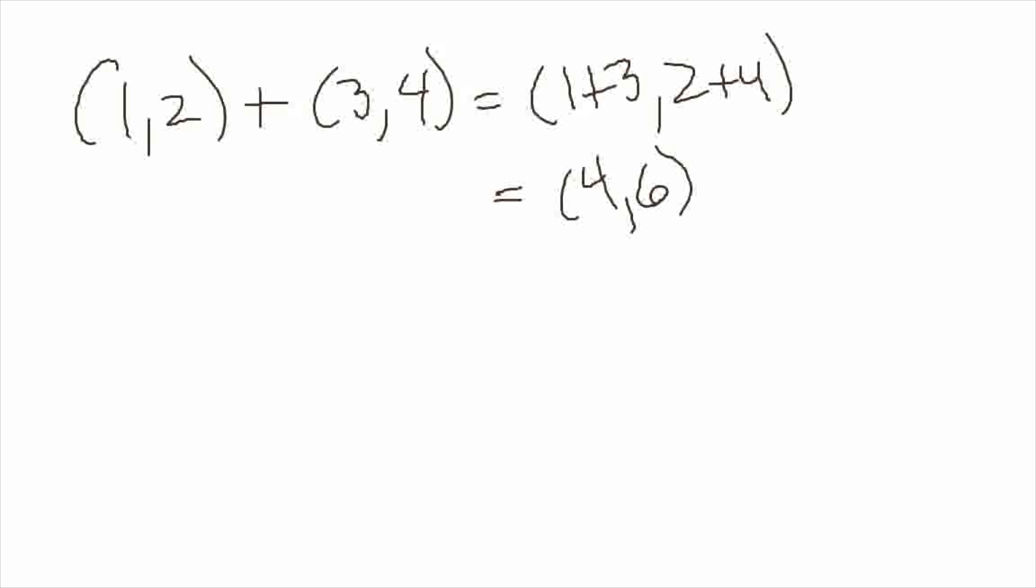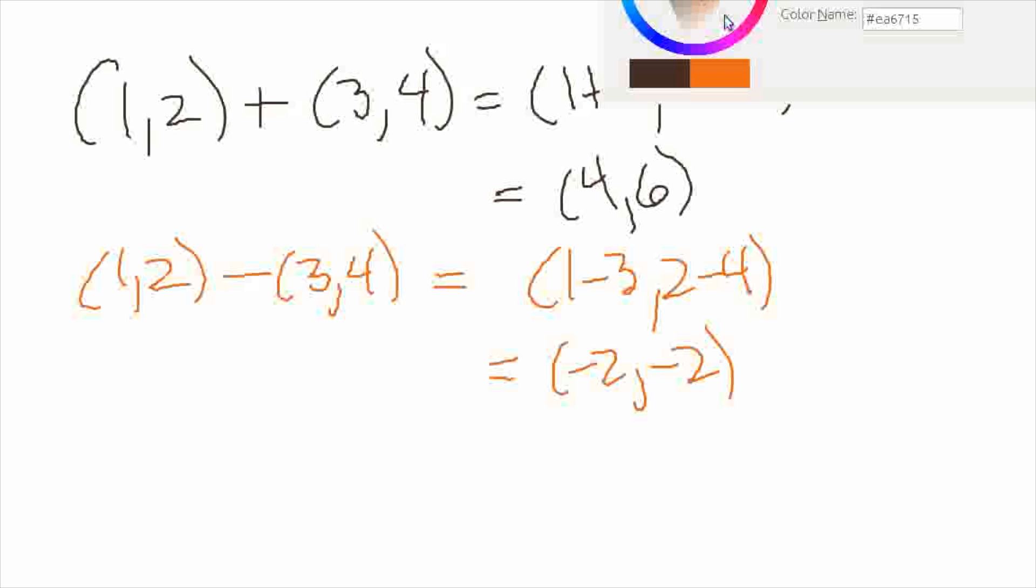All right, now what about vector subtraction? In subtraction, instead of adding the components, you simply subtract the components. So 1 minus 3, 2 minus 4. So that gives minus 2 minus 2. In this case, they were both the same.